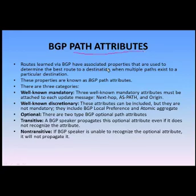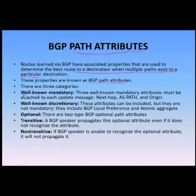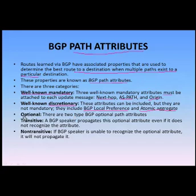Next, let's take a look at BGP attributes, known as path attributes. BGP uses certain attributes when carrying routes in BGP updates. There are three categories: well-known mandatory attributes, which must be attached with each update — such as Next Hop, AS Path, and Origin; well-known discretionary attributes, which can be included but are not mandatory — such as Local Preference and Atomic Aggregate; and optional attributes, which have two types: transitive and non-transitive.